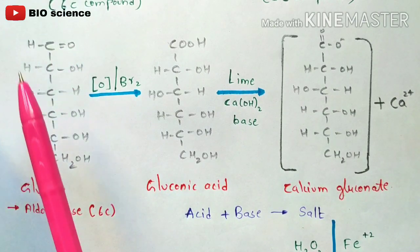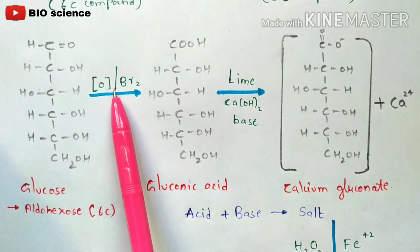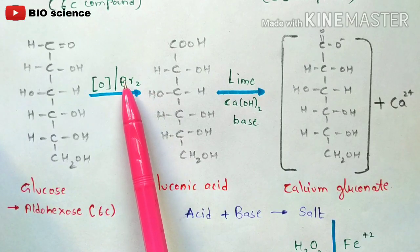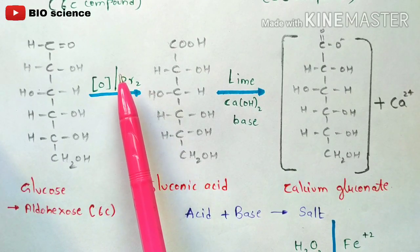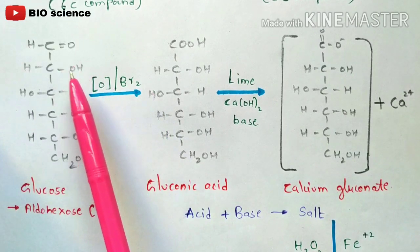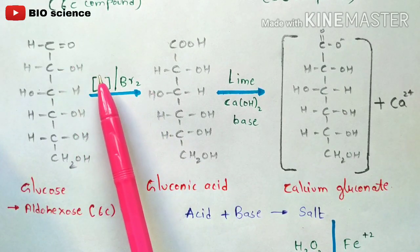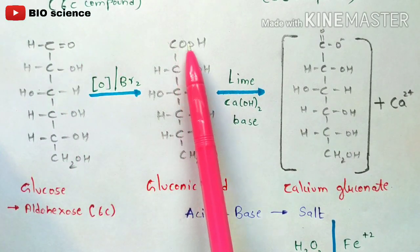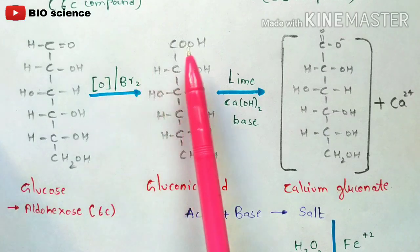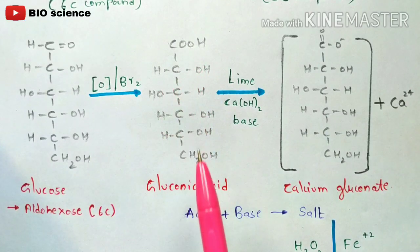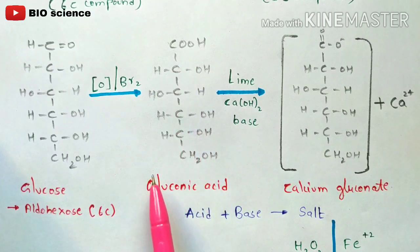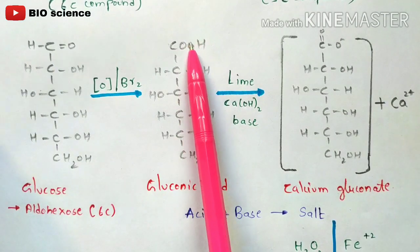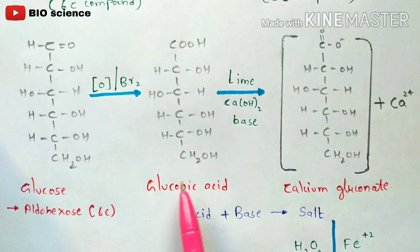Now it is treated with bromine (Br₂) — this undergoes oxidation. Br₂ acts as a catalyst to speed up the reaction. Oxidation occurs at the first carbon, so the CHO aldehyde group gets converted to a COOH group. The remaining projections stay the same. This product is called gluconic acid, because the OH group — the acid group — is now present at the first carbon.